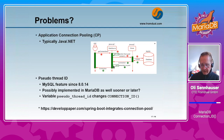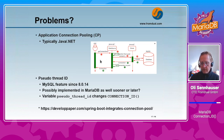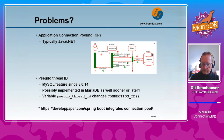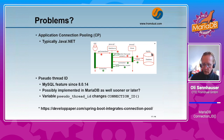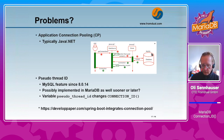But the database connections are shared between different application connections. So from the database side, we get different application parts for the same connection ID. This makes it a little bit harder to find out from the general query log and the connection ID where in your application the problem was caused. That's one thing you have to learn to deal with.